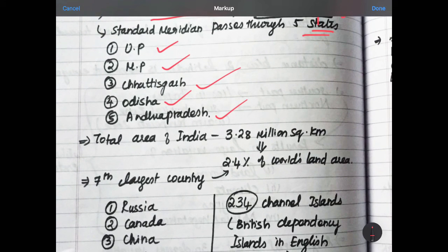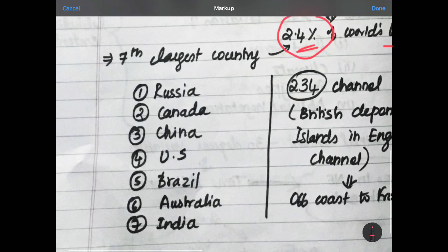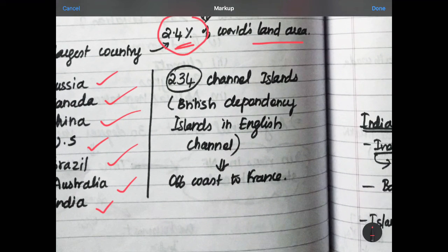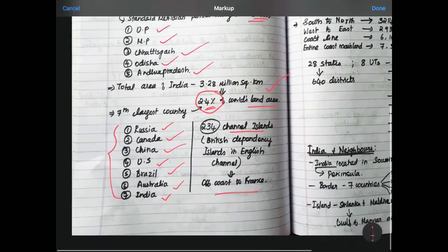The total area of India is 3.28 million square kilometer which composed of 2.4 percentage of world's land area to the total land mass, total land area of world. We composed of 2.4 and it is the 7th largest country in land area and the 1st is Russia, 2nd is Canada, 3rd is China, 4th is US, 5th is Brazil, 6th is Australia and 7th is India. The very smallest land area among world is Channel Island. The Channel Island is an island which is a British dependency in English Channel. It is off course to France.